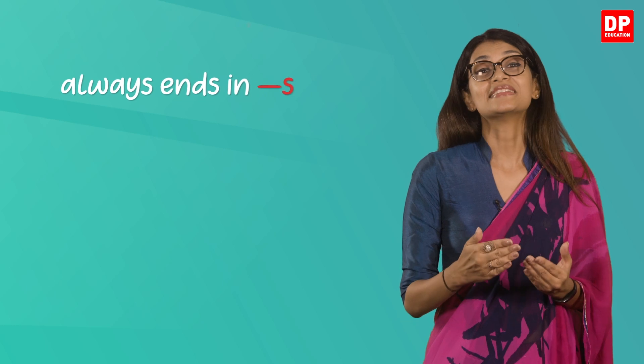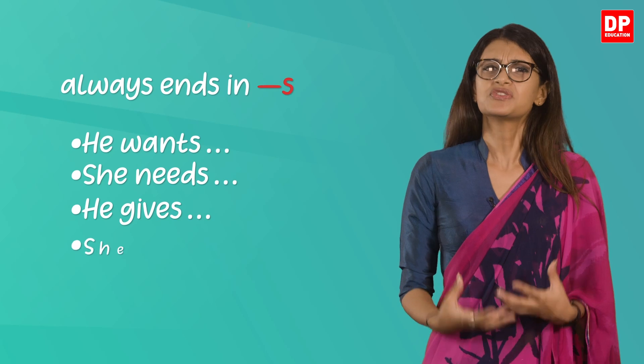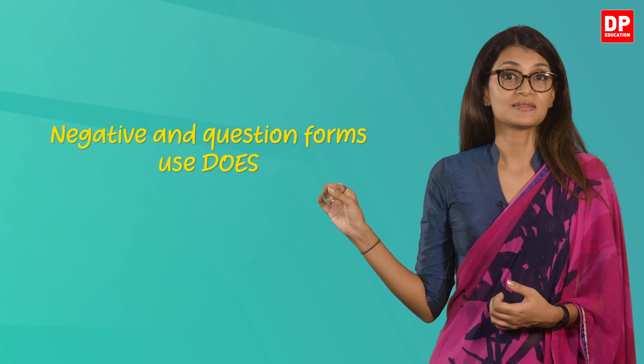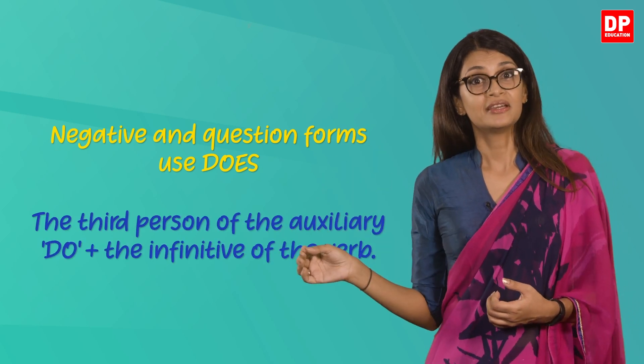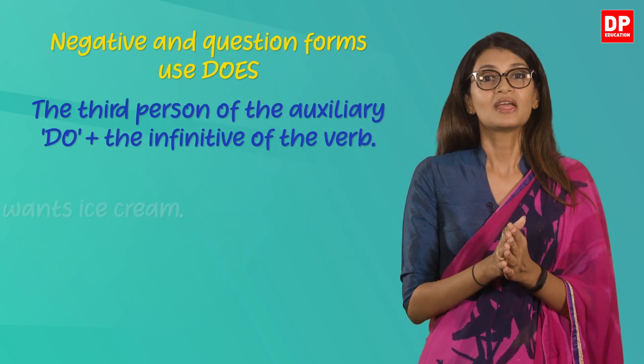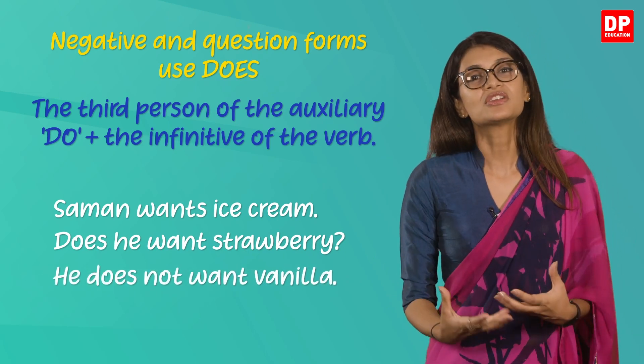Before we do some exercises, let's look at how the third person singular verb is changed. As mentioned, it always ends in S. For example: he wants, she needs, he gives, she thinks. Negative and question forms use 'does' — the third person of the auxiliary 'do' — plus the infinitive of the verb. For example: 'Someone wants ice cream. Does he want strawberry? He does not want vanilla.'